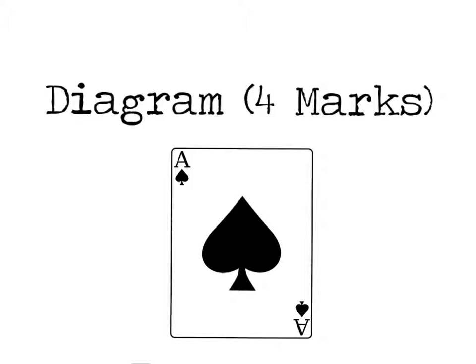This video is for AQA AS Economics, and it's for either macro or micro, so either paper one or paper two. But it's looking at the diagram question, which is worth four marks.